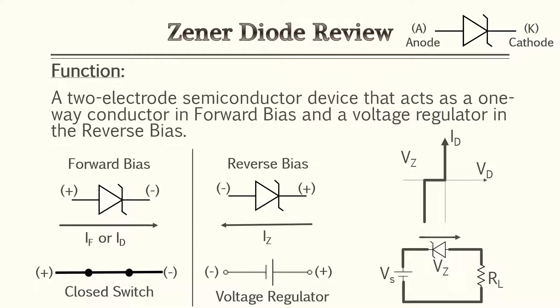For this lesson we'll be going over Zener diodes. Zener diodes are a two-electrode semiconductor device that acts as a one-way conductor in the forward bias condition and a voltage regulator in the reverse bias condition. They form and function just like a junction diode which we talked about in a previous lesson. However, when running in the reverse bias condition, the Zener diode acts as a voltage regulator. This can be used to step down voltage from a higher voltage to a lower voltage.